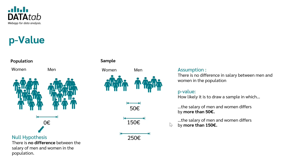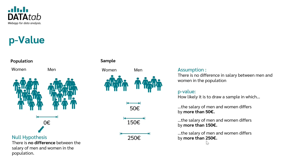And in the third case, the p-value indicates how likely it is to draw a sample in which the salary of men and women differs by more than 250 euros. Our assumption for the population still is that there is no salary difference between men and women.